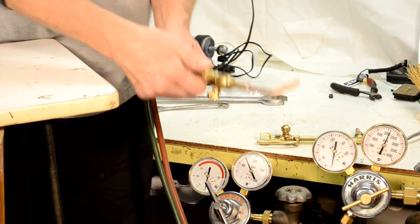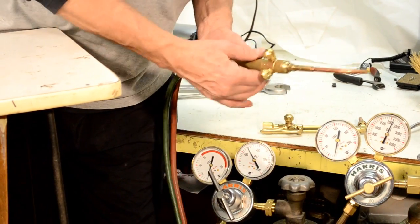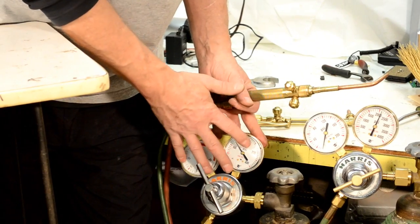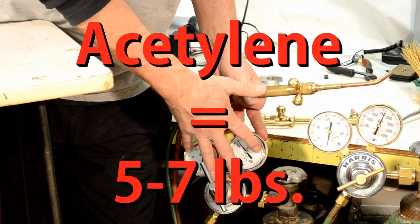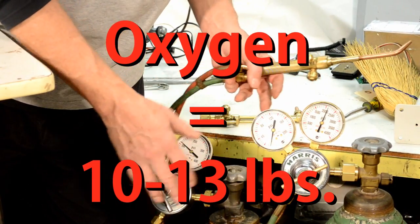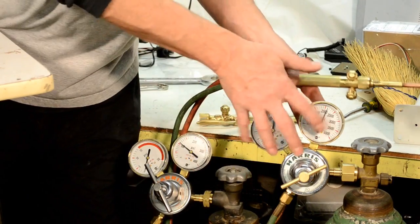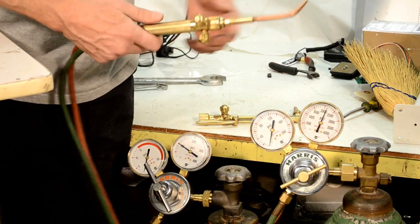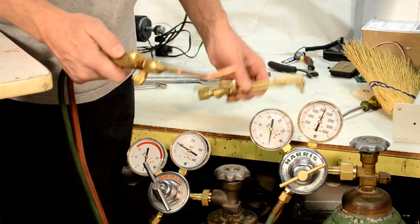To set your gauges, your regulators, where you want them for your pressure, just as a rule of thumb, goes 5 to 7 pounds. Usually I like to run it at 7. That's a good all-purpose pressure. Oxygen, anywhere from 10 to 12. If I'm running 7 on here, I run 12 or 13 on the oxygen. That's just a good all-purpose setting, both for brazing, welding, and cutting.